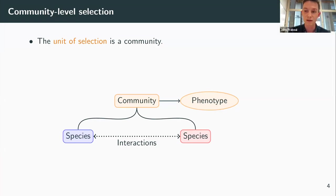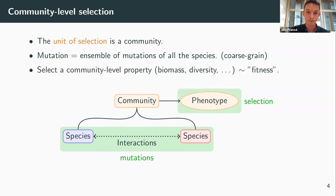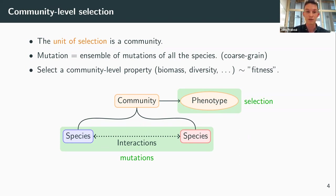In a community-level selection, the unit of selection is a community. The mutation can be seen as the ensemble of mutations of all the species — it's a kind of coarse-grained mutation. We then select a community-level property, such as its biomass or its diversity, that is related to its fitness, so its community fitness.